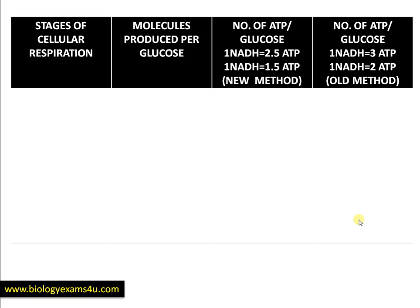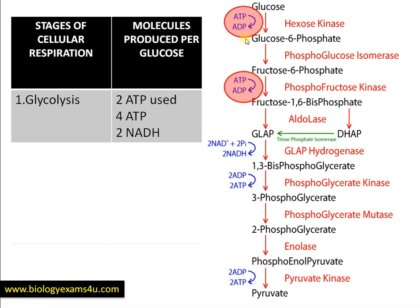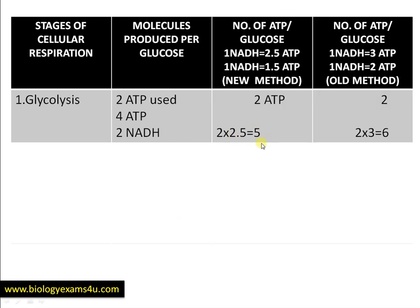Now let us look at ATP and NADH synthesized at each stage of respiration — comparing the new method (1 NADH = 2.5 ATP) with the old method (1 NADH = 3 ATP). In glycolysis, 2 ATP are used in the energy investment phase and 4 ATP are synthesized, giving a net gain of 2 ATP. Also, 2 NADH are synthesized when glyceraldehyde phosphate is converted to 1,3-bisphosphoglycerate. So after glycolysis: 2 NADH × 2.5 = 5 ATP (new) or 2 NADH × 3 = 6 ATP (old), plus 2 ATP, giving 7 ATP (old) or similar totals (new).